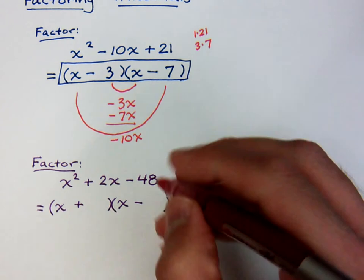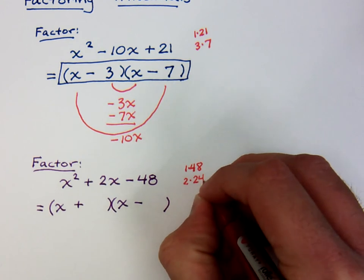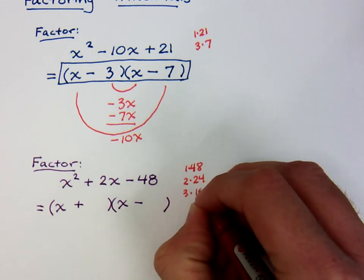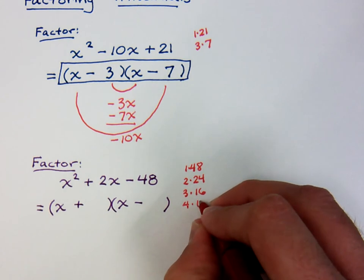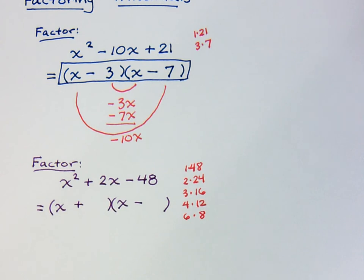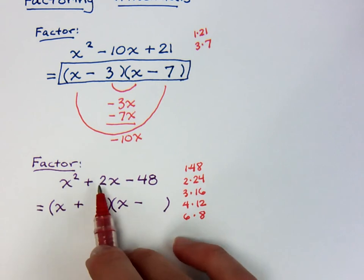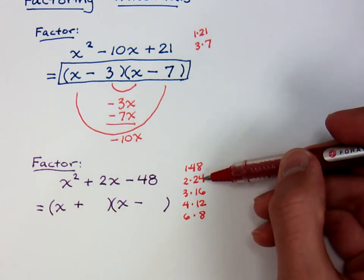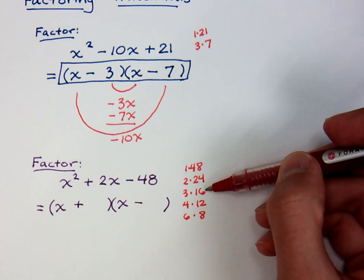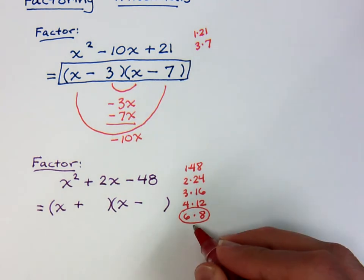But remember this: these guys have opposite signs. So when I look at the factors for 48, I'm going to be looking for those factors that are off by 2. And in order to add a positive and a negative and still be positive, that means your larger number has to be positive. Now I'm going to list all the factors that we have for 48. We've got 1 and 48, 2 and 24, 3 and 16, 4 and 12, 6 and 8.